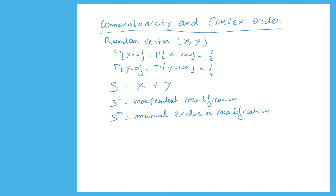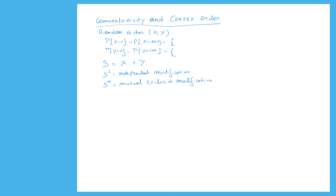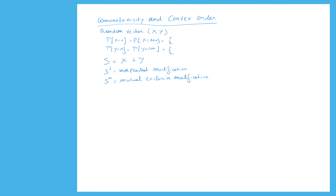We made an assumption on the dependence structure and for these two situations we determined the stop-loss premium. We showed that the stop-loss premiums of the independent modification are always larger than those of the mutual exclusive modification, which implies a convex order between S_independent and S_m. So we had the following stop-loss curves.